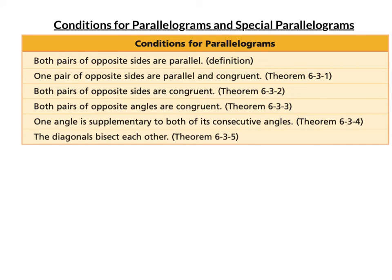To summarize the reasons a quadrilateral is a parallelogram: both pairs of opposite sides parallel (definition); one pair of sides congruent and parallel; both pairs of opposite sides congruent; both pairs of opposite angles congruent; one angle supplementary to both consecutive angles; and the diagonals bisect each other. You need to memorize these. Other quadrilaterals like squares and rectangles are parallelograms, so they inherit properties like diagonals bisecting each other and opposite sides being congruent — making the parallelogram one of the most important shapes.